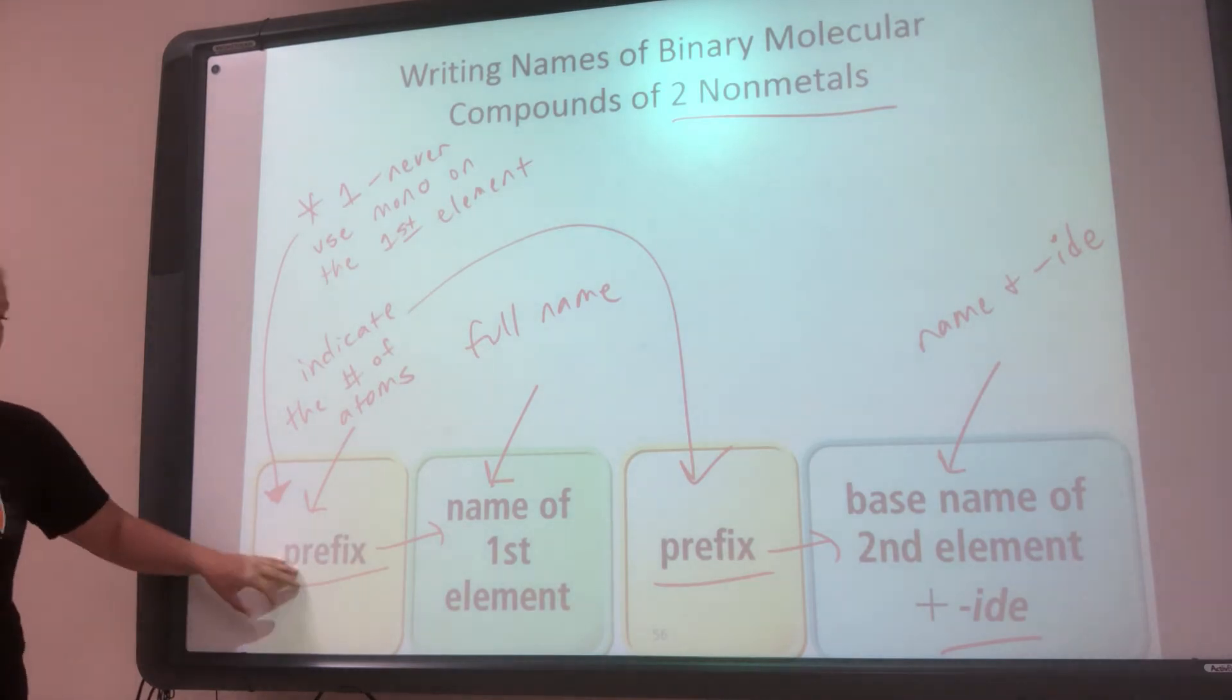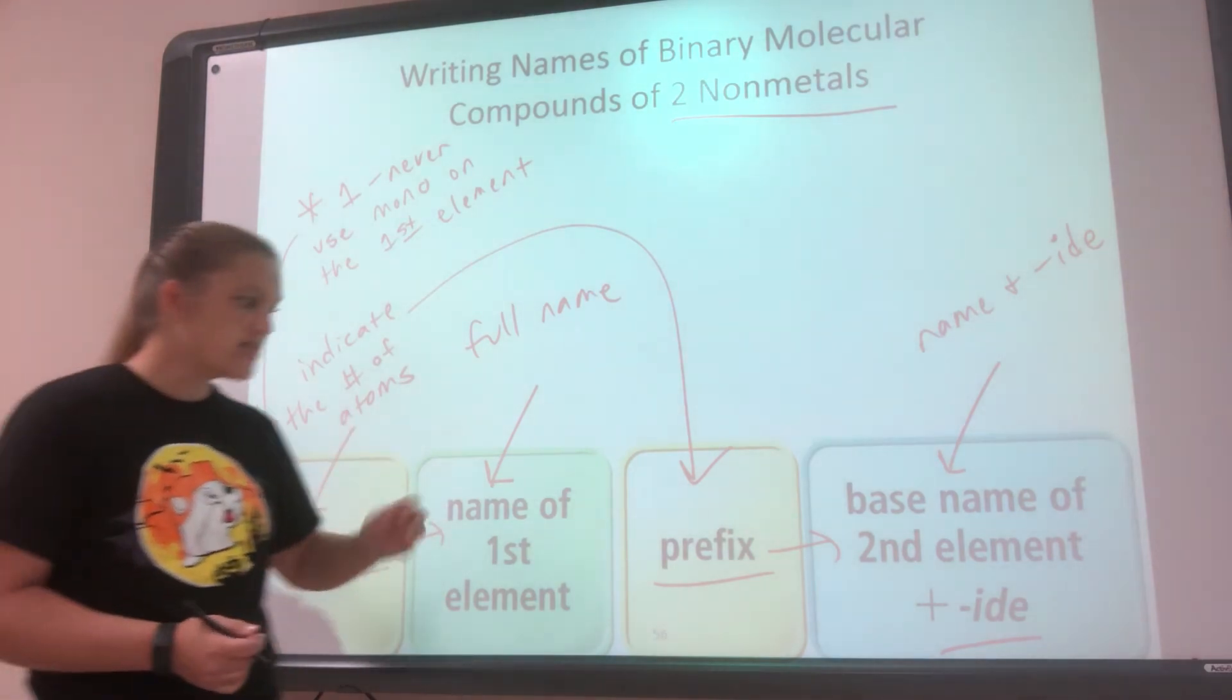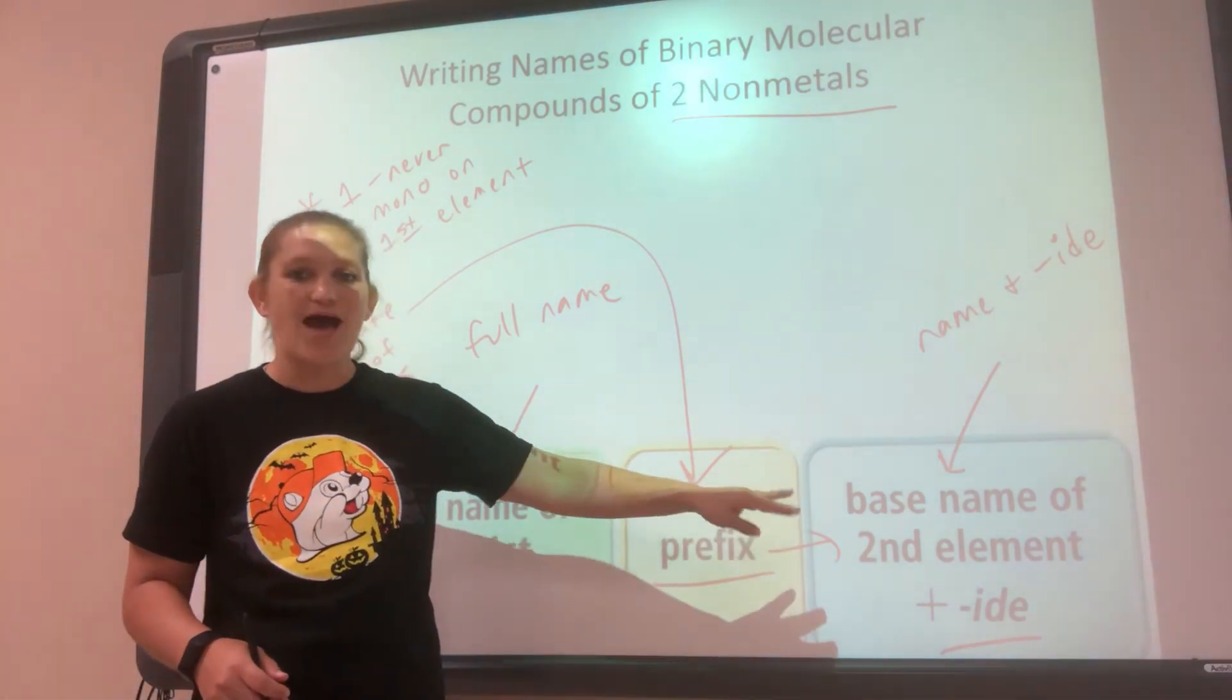So it's prefix, name of the first element, then a space, prefix, then the name of the second element with the ending -ide.